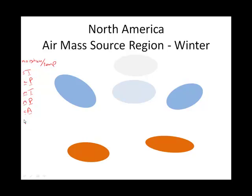In general, there are no maritime arctic air masses. The reason is you just can't get a very cold air mass to have any appreciable amount of moisture. Over these two slides we're going to look at North America seasonally, and you're going to see there are slight differences in the air masses that can form in the wintertime versus the summertime.